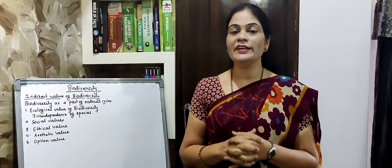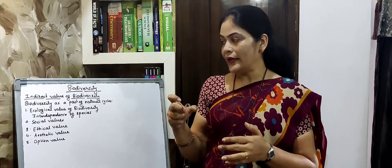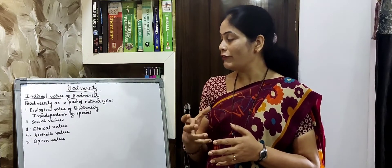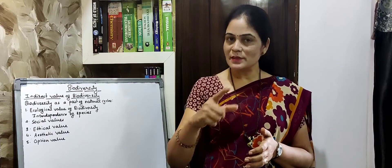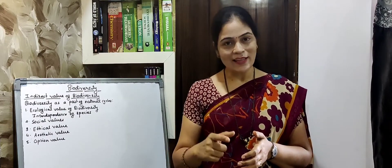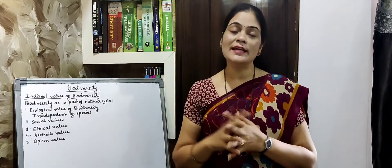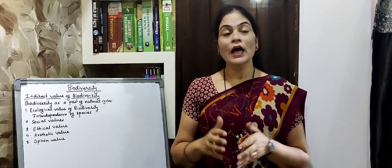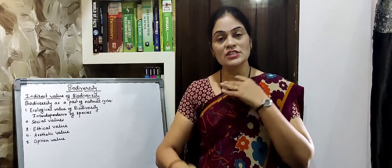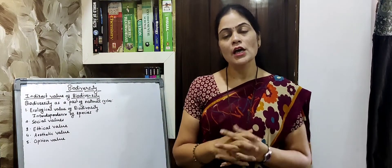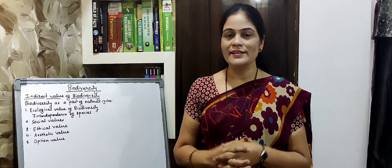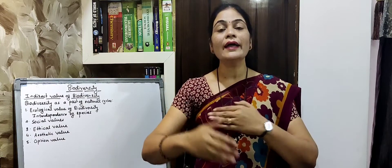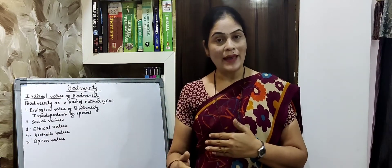First of all, we discuss the basic indirect value: the ecological part of natural cycles. Natural cycles include the water cycle, and you will study many environmental and biogeochemical cycles — the nitrogen cycle, oxygen cycle, carbon cycle, sulfur and phosphorus cycles. These cycles maintain the environmental balance and atmospheric balance.